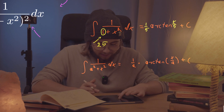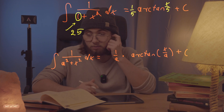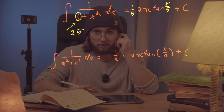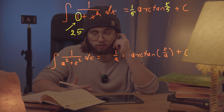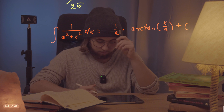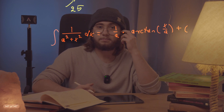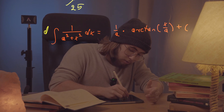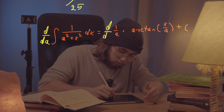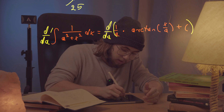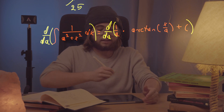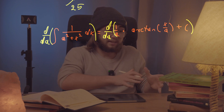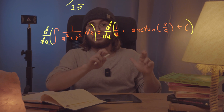Let's use the Feynman trick, which says: whenever you have a parameter, use it. We're going to take the derivative of both sides of this equation with respect to a — the derivative of the integral on the left and the derivative of the 1 over a times arctangent expression on the right — and we'll keep our fingers crossed that we get something interesting.